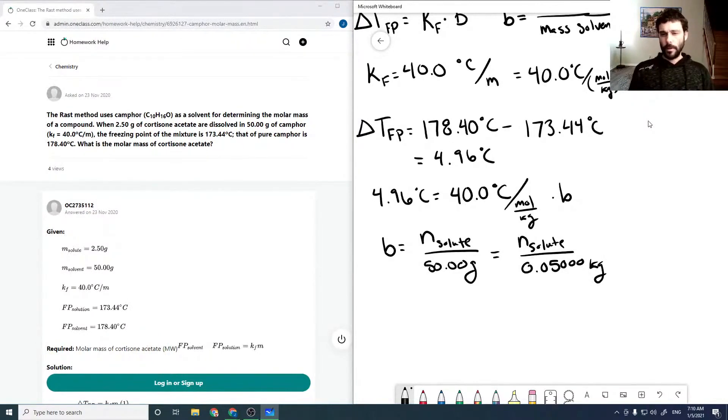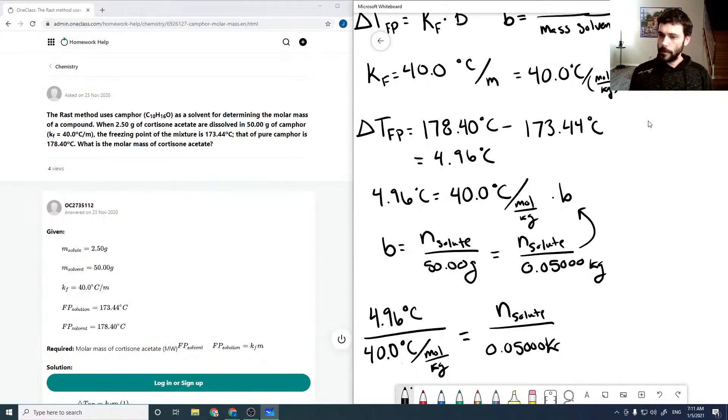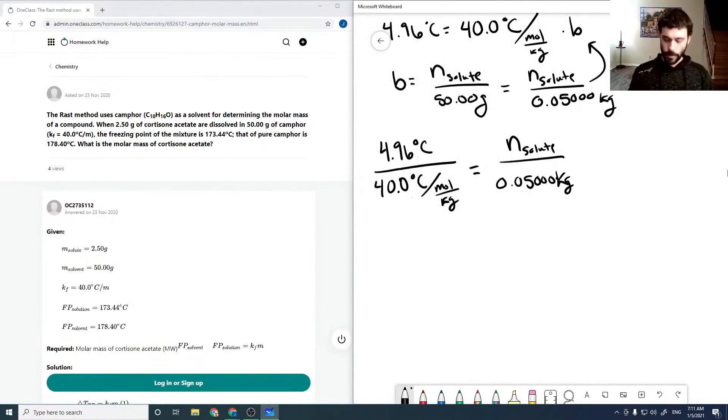So putting this into our freezing point depression equation, putting this in for our b up here, we would get 4.96 degrees Celsius. Doing some rearrangement, 1 mole per kilogram is equal to our n solute over our mass of solvent. And so then we can solve for our moles of solvent.